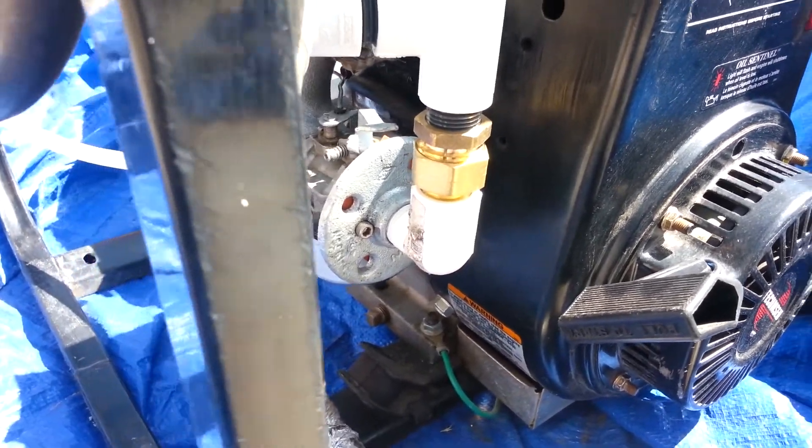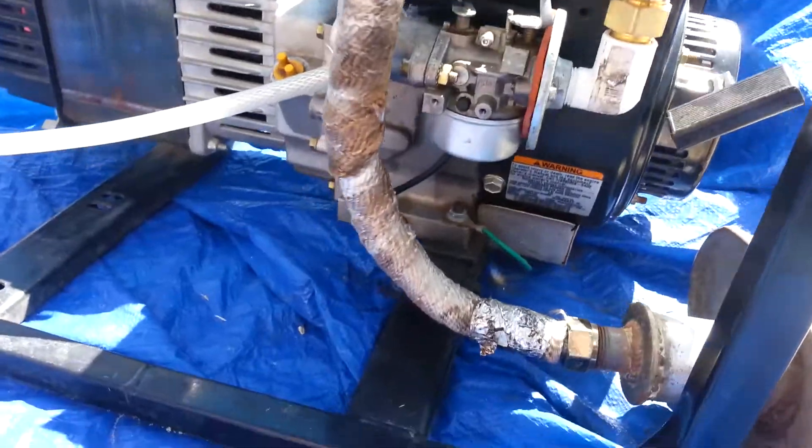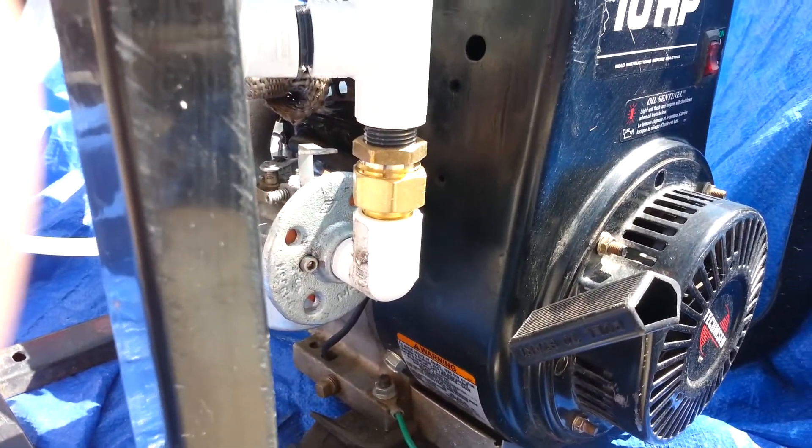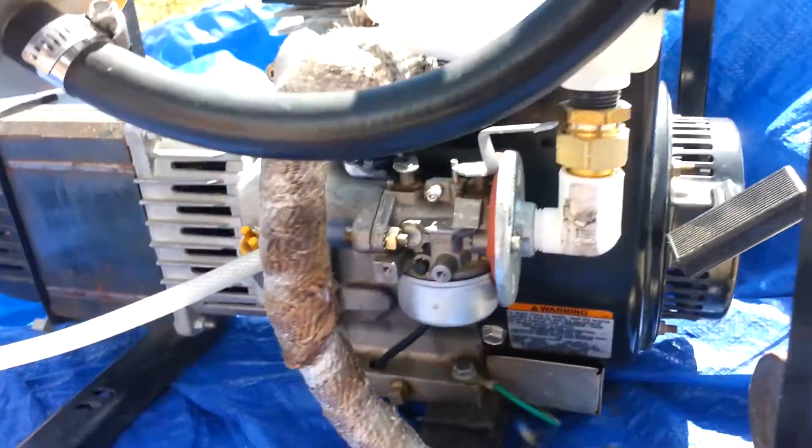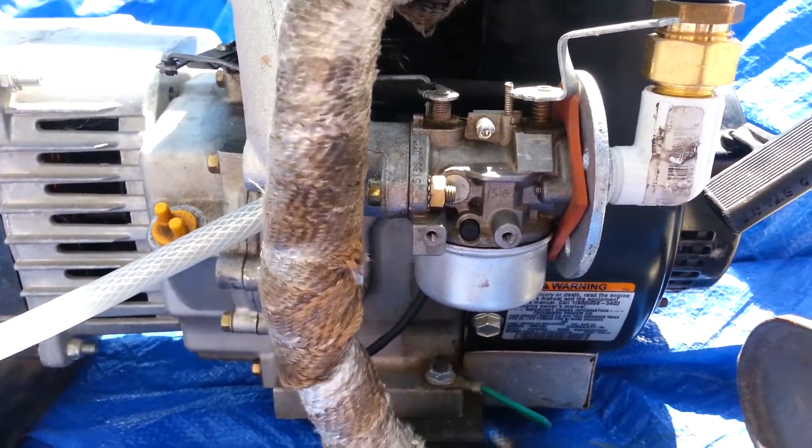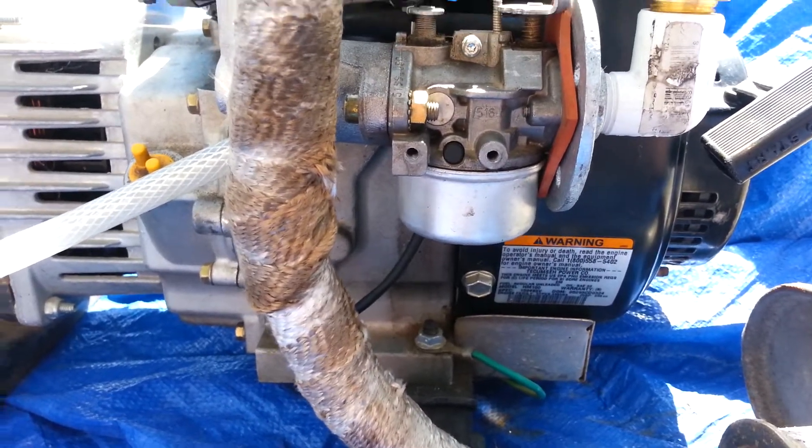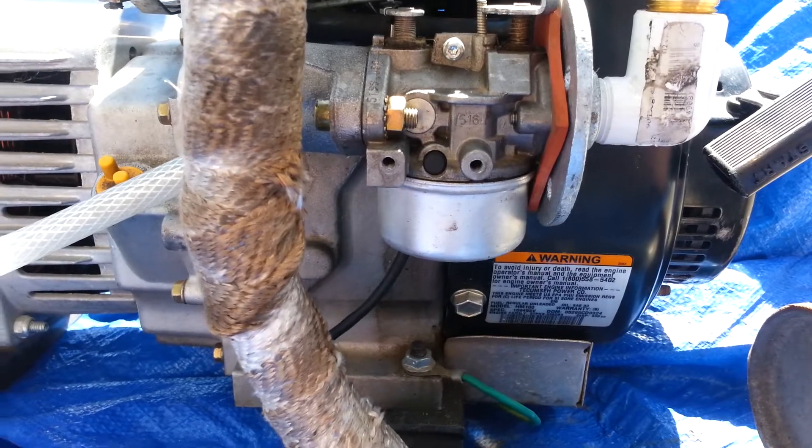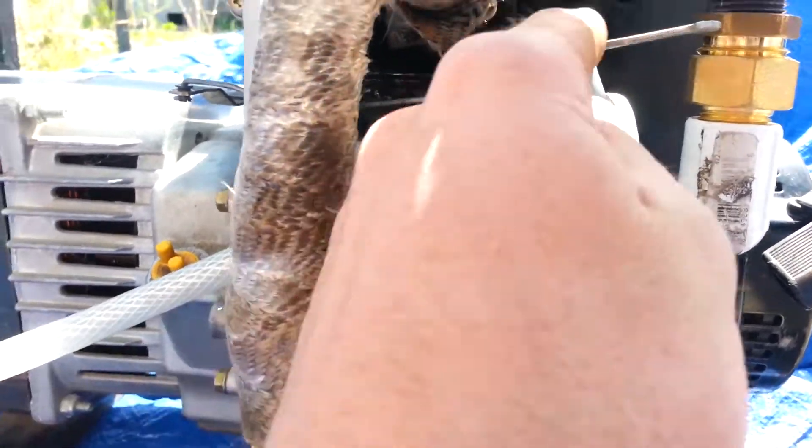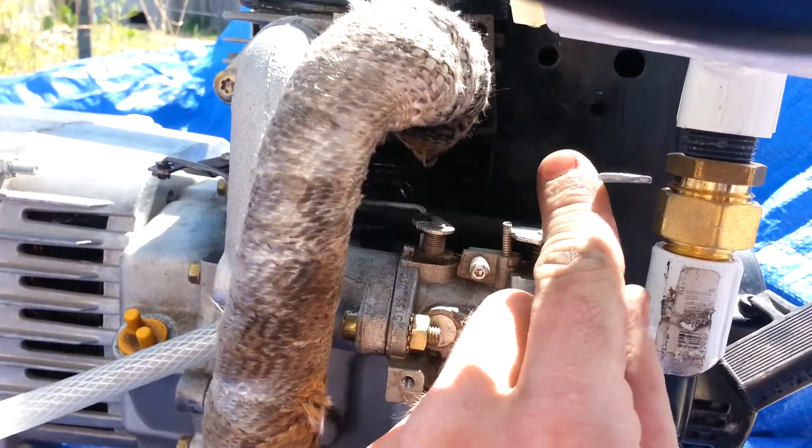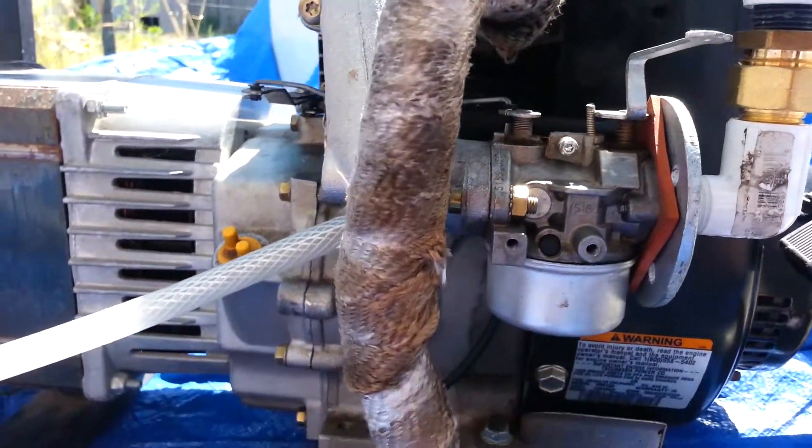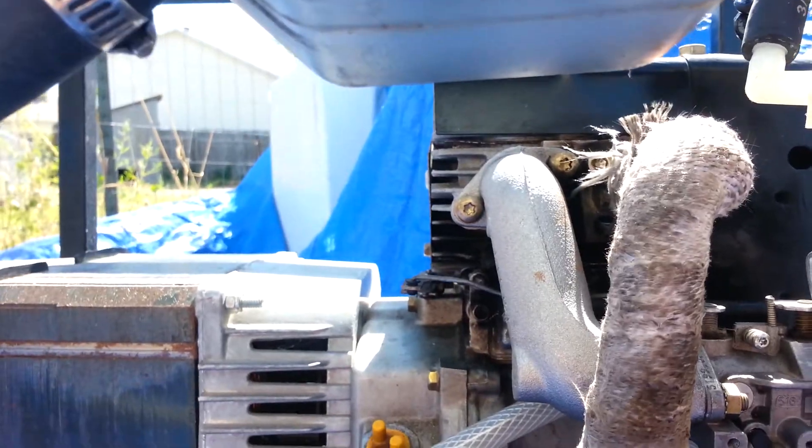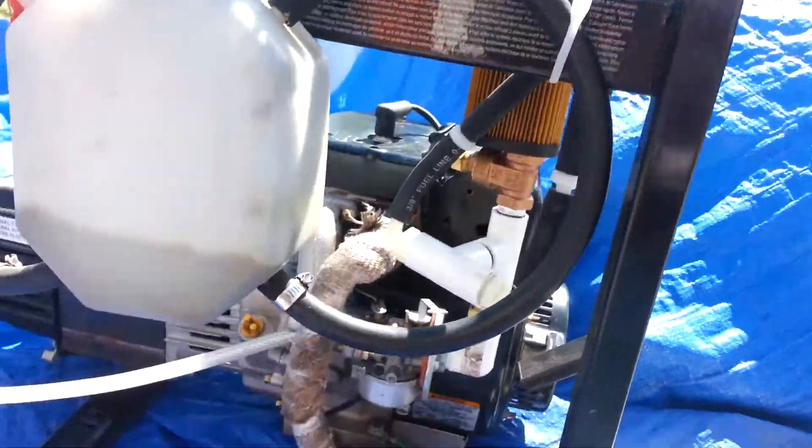And then it goes from there into this flange here, just a regular half-inch flange pipe flange. I have a gasket between there to seal it, and then it goes into my carburetor. And I still have the ability to choke it and put it on full, so it passes through there and it goes up into the intake and my engine will run.